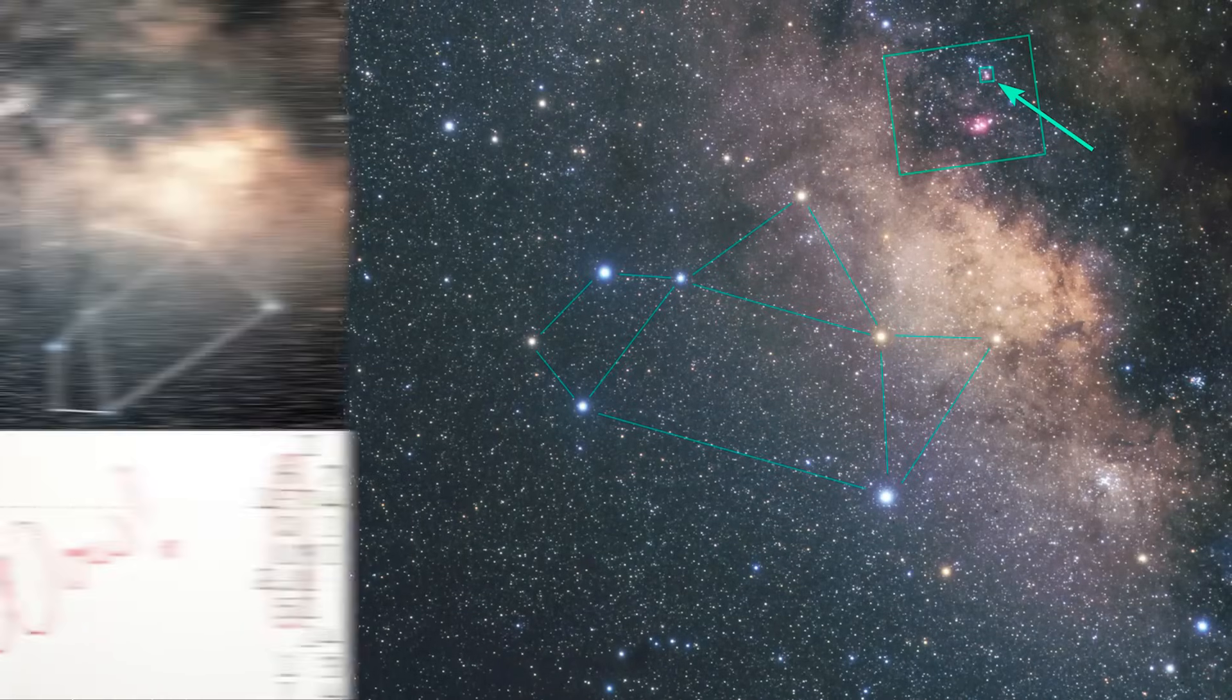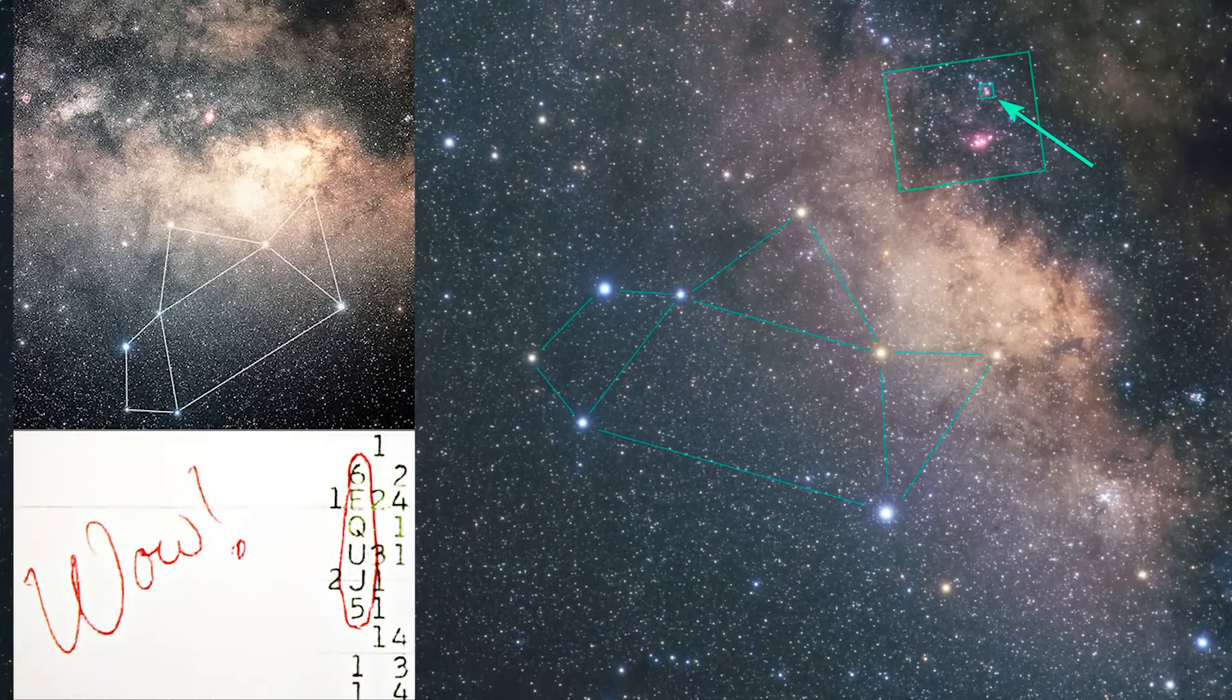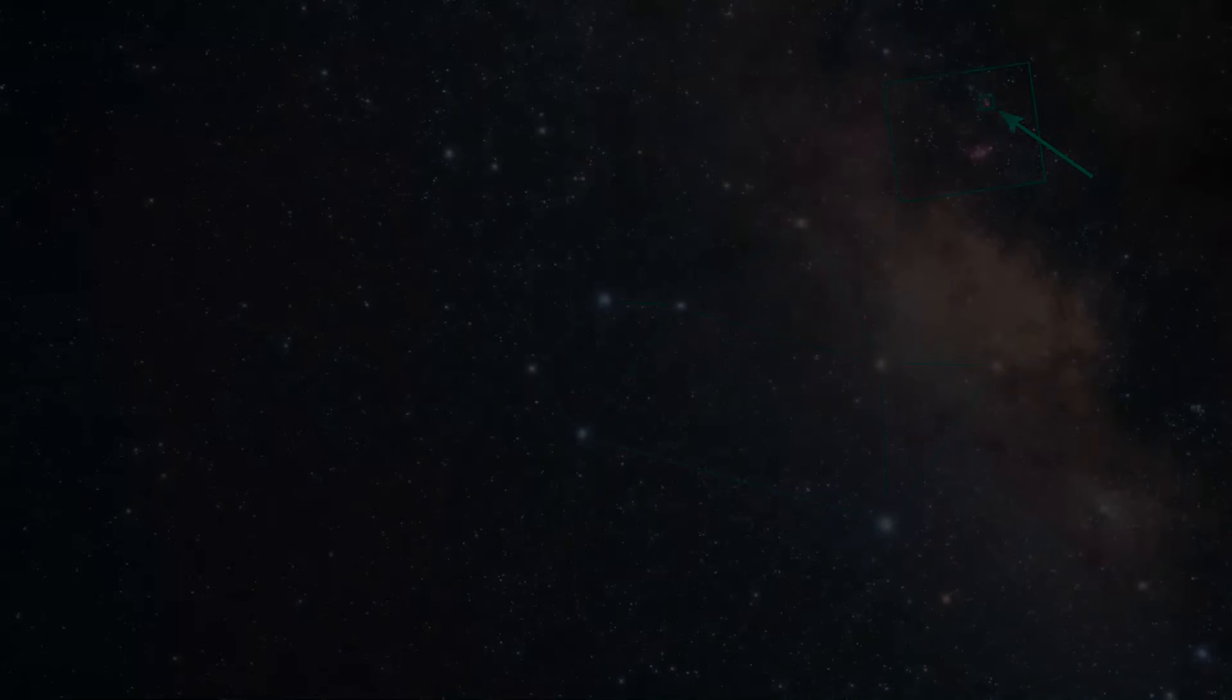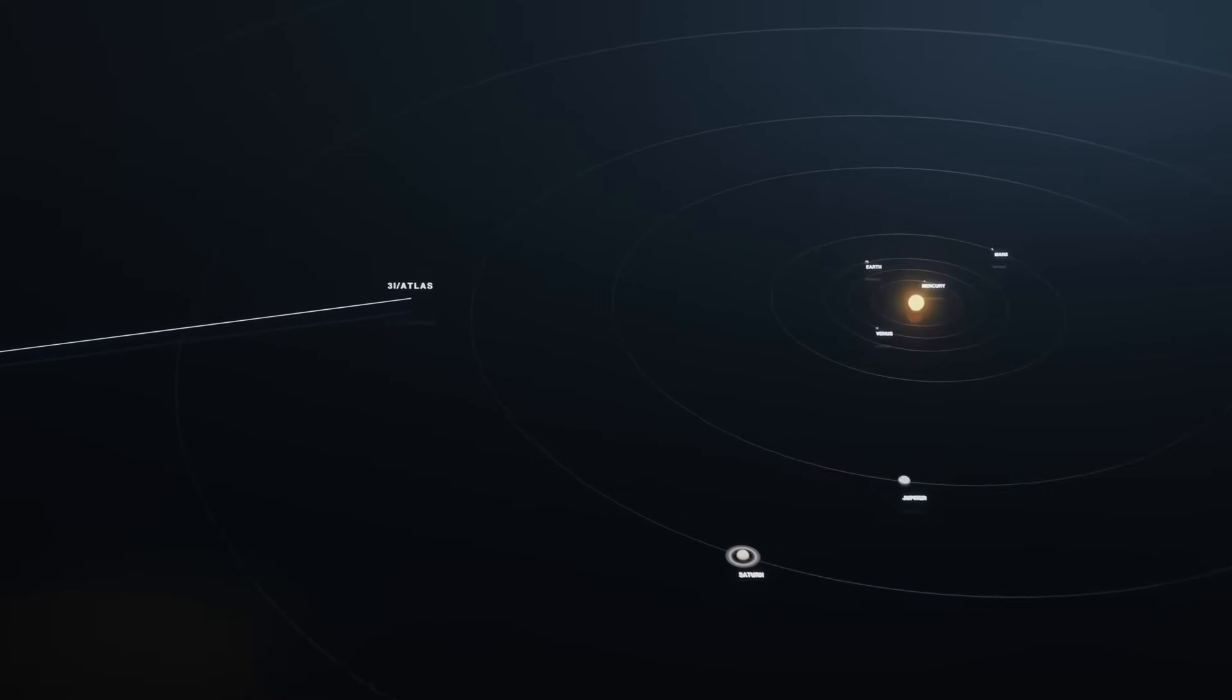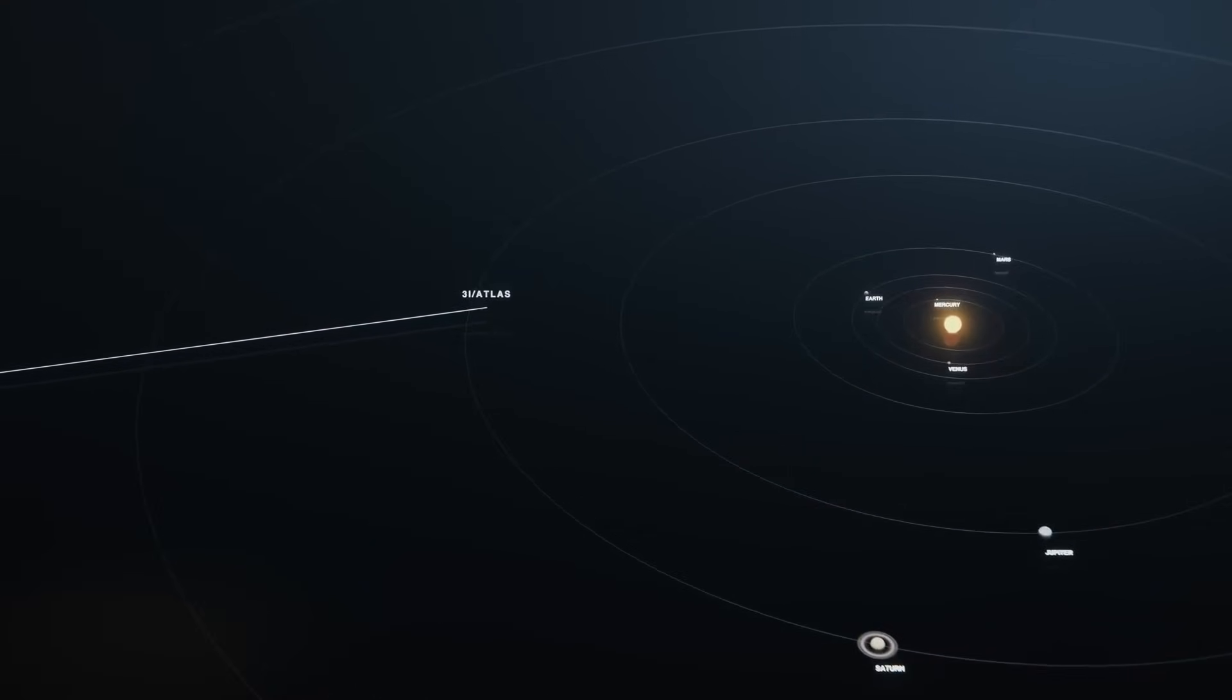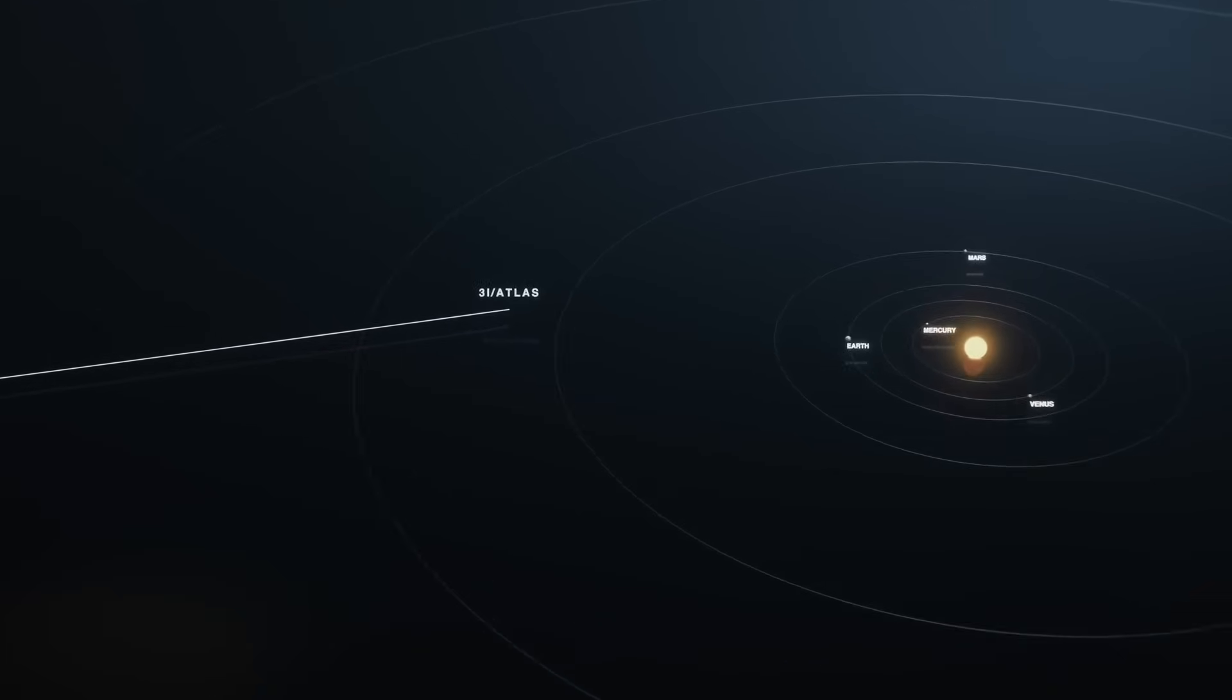From the same side of the sky, an unknown object is approaching. Green, massive, and interstellar. Its name is 3i-slash-atlas, and perhaps it relates to that old conversation. But what could it have been?